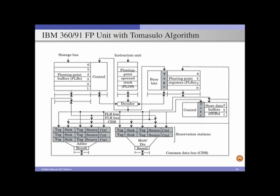As and when the data is available in these registers, only then will the instruction be issued to the functional unit for execution. If the operands are not available for an instruction, the instruction will not be issued to the functional unit — it will wait in the reservation station until both operands are ready.